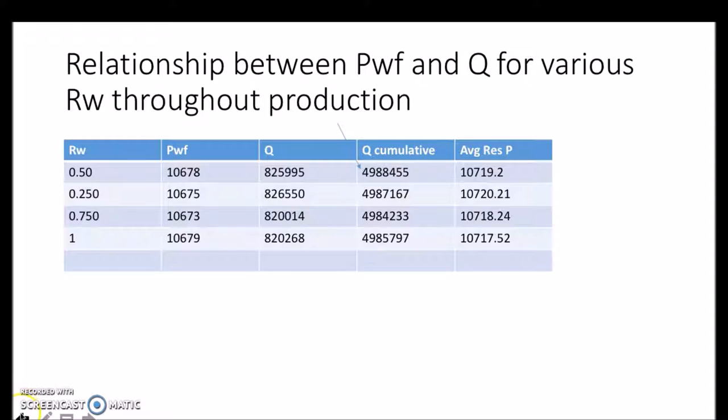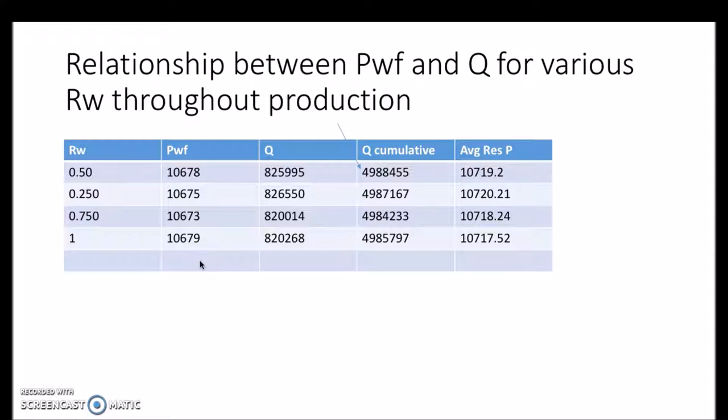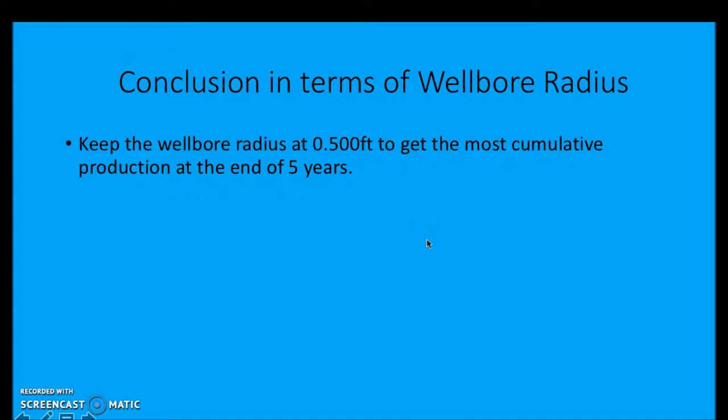But if you take a closer look at the actual points of intersection between the IPR and the TPR, you can see that there is an optimum case which you get the most cumulative production, and that will occur at a wellbore radius of 0.5 feet. As you can see, the cumulative production after 5 years of production using a 0.5 feet wellbore radius will achieve the most production. Although the numbers are really close, the highest cumulative production will be achieved using a 0.50 feet wellbore radius.